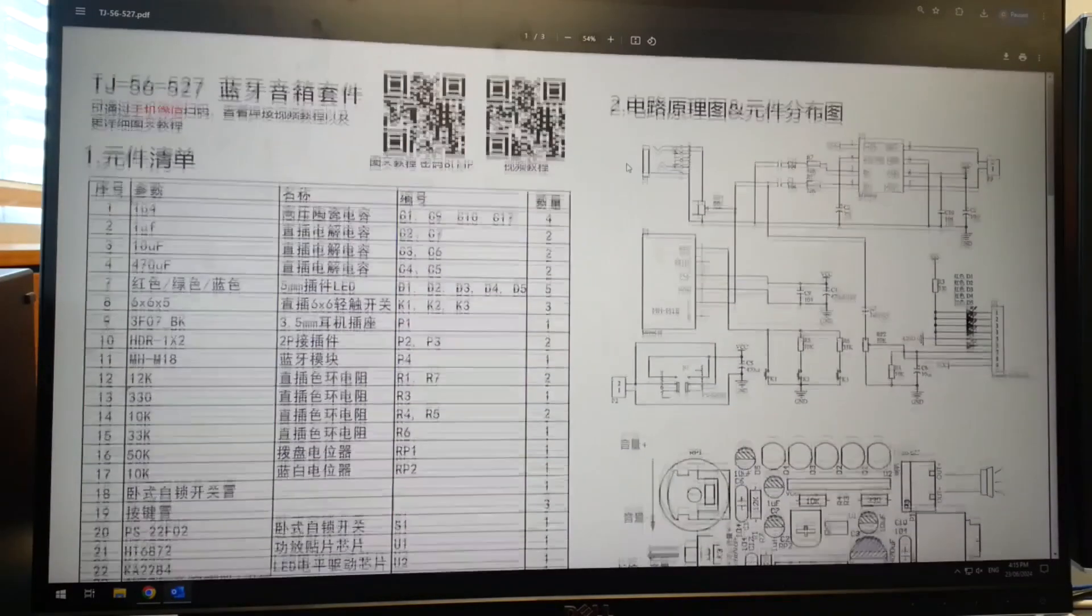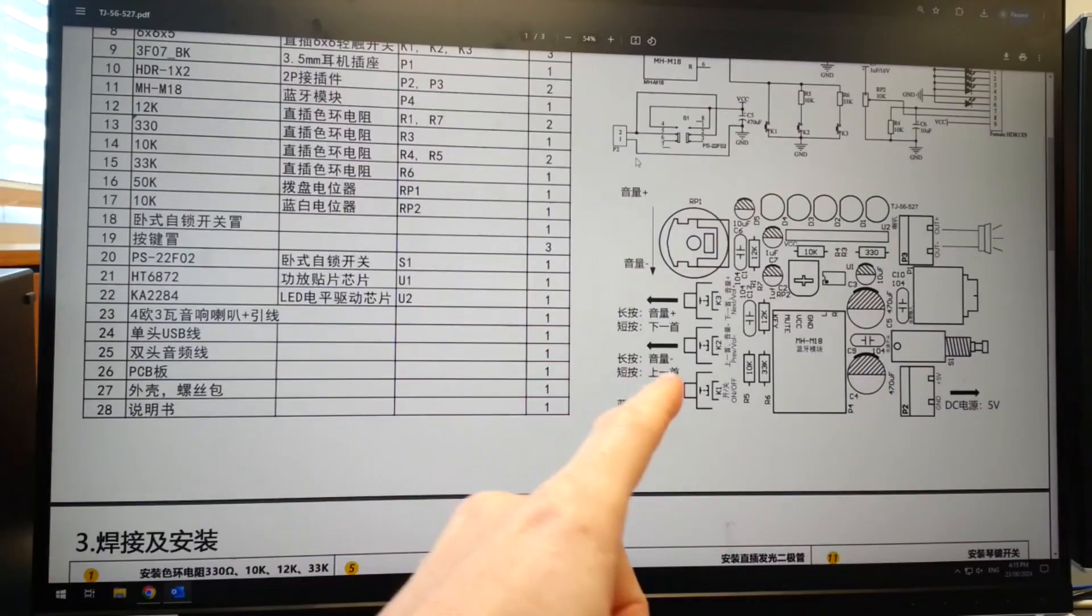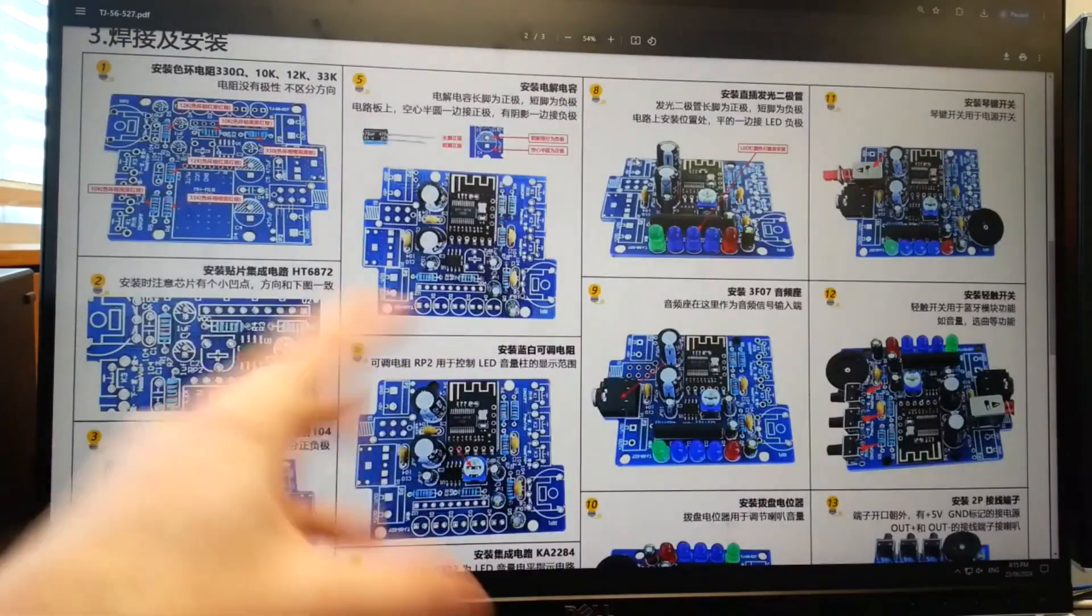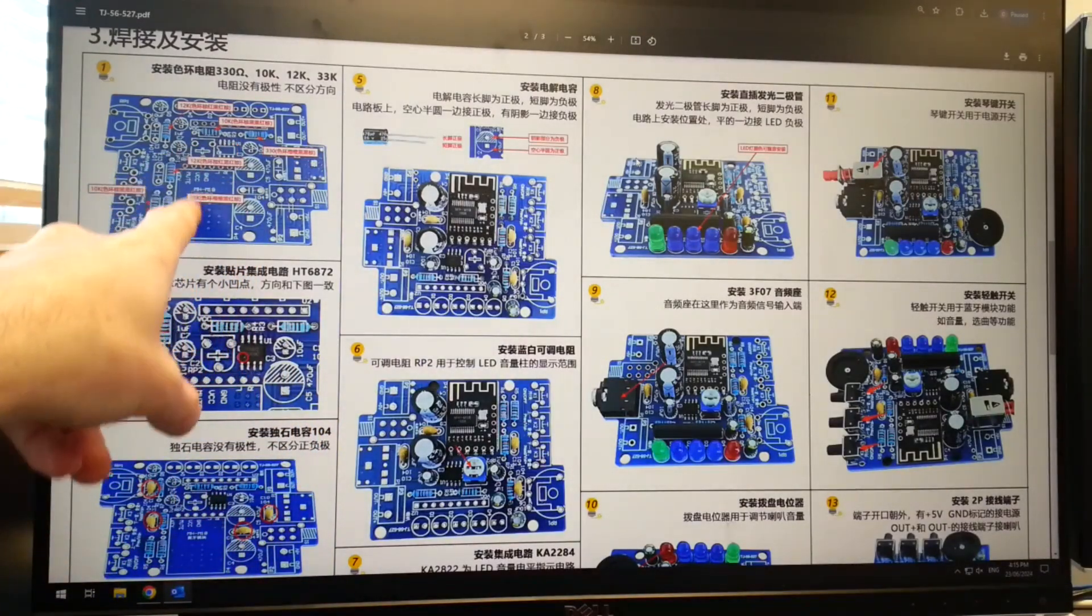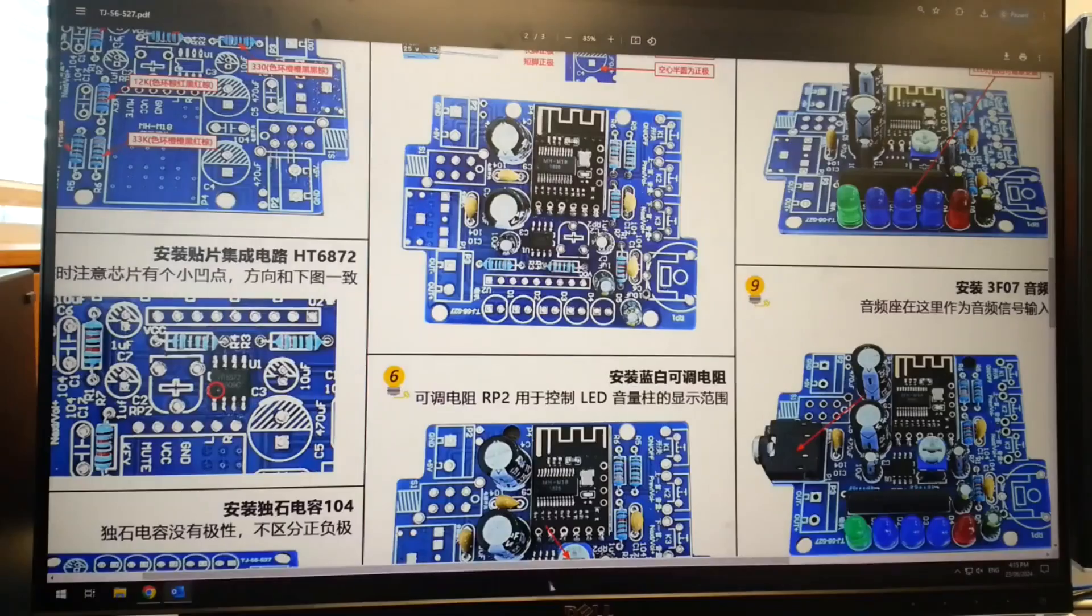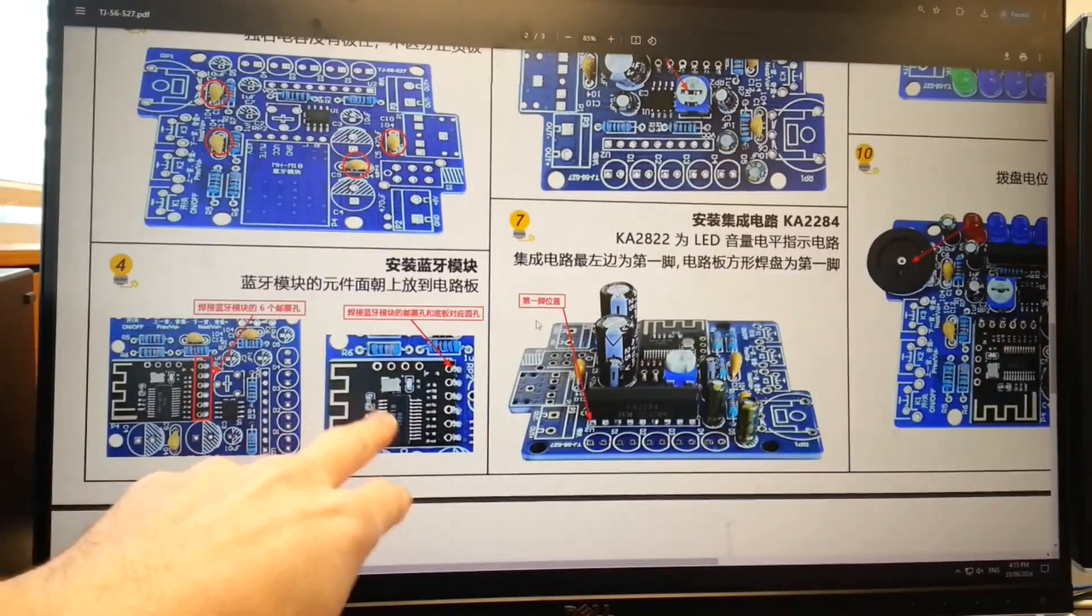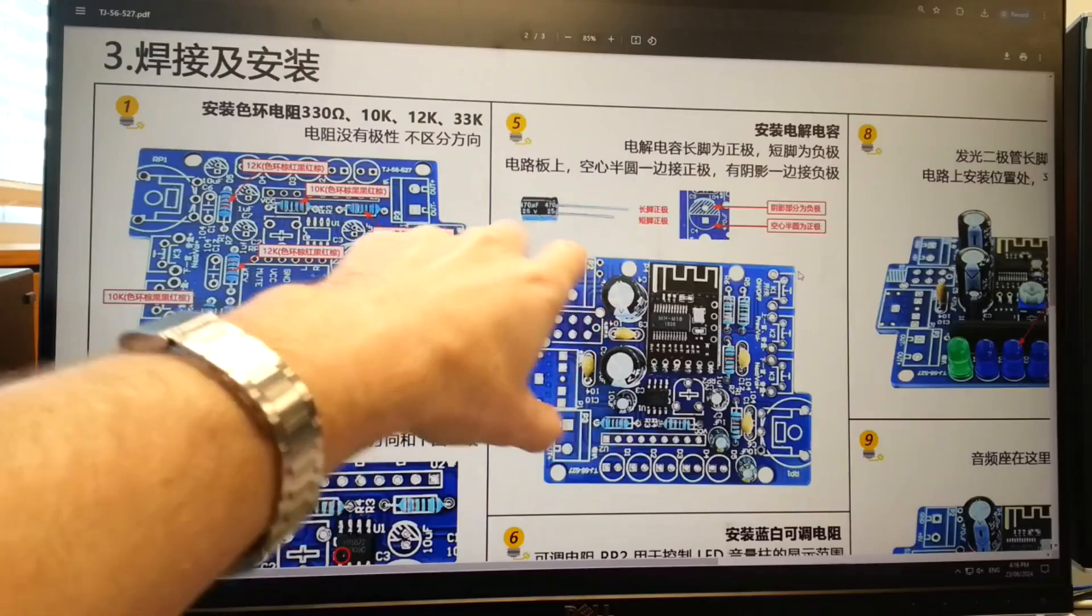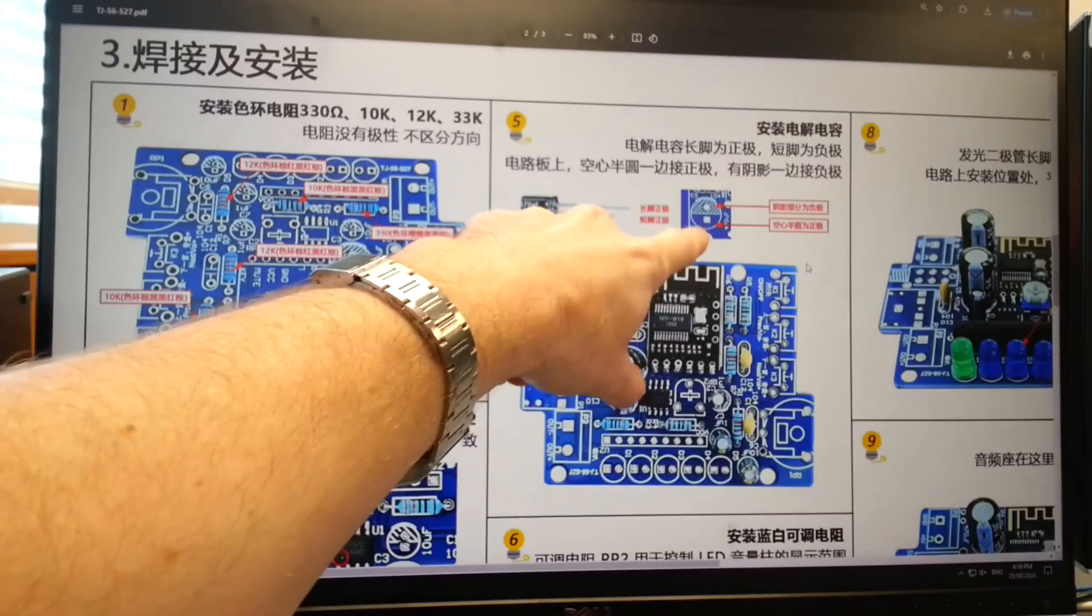Hey, I went to the website that they give and downloaded the instruction set. Again, you can see a lot of it's in Chinese. However, there's stuff that you can decipher on here quite easily, and they've done a lot of pictures which is awesome. So they give advice in terms of putting in resistors first and then doing the microchip, and then putting in caps, and then doing the Bluetooth module.